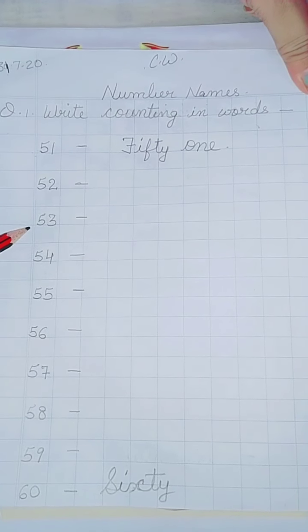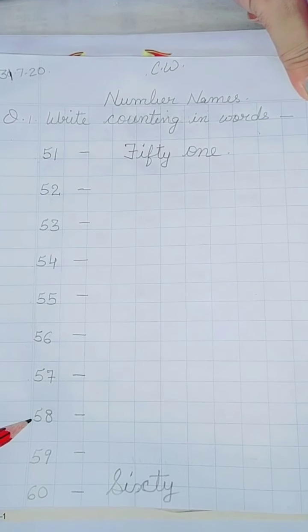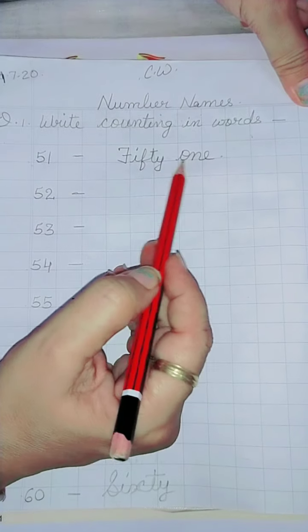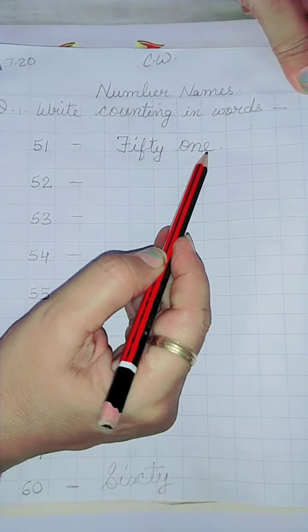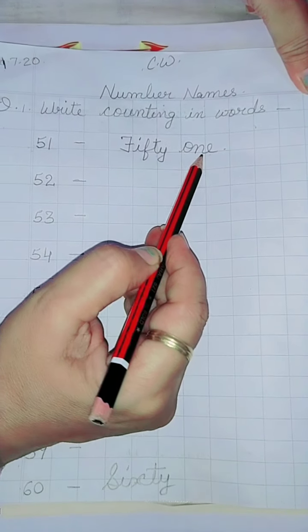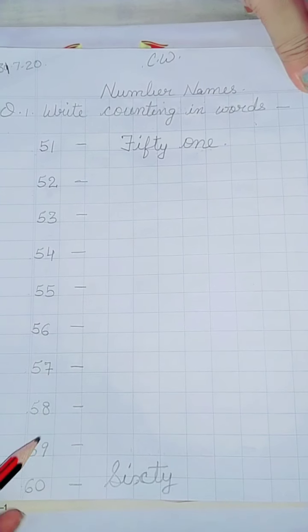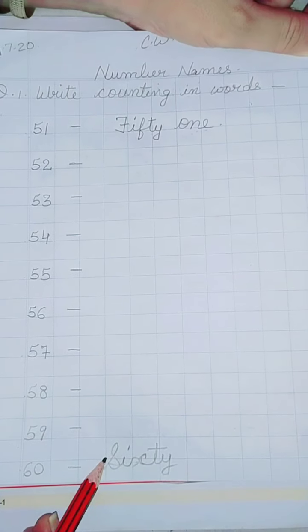51, 52, 53, 54, 55, 56, 57, 58, 59, 60. So 51 spelling I have written F-I-F-T-Y-O-N-E. 51, now you will write the spellings of 52 to 59. Okay? And this is homework for you.